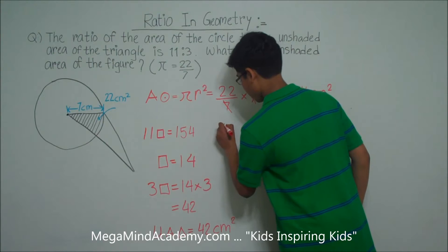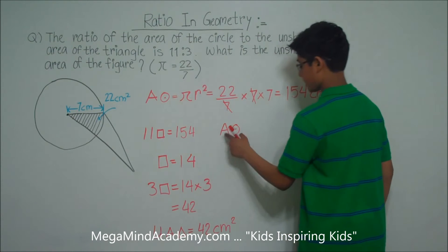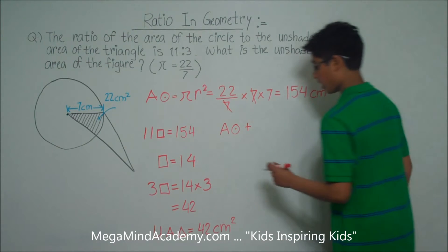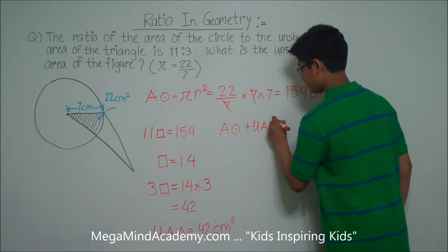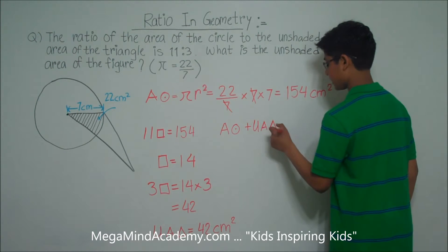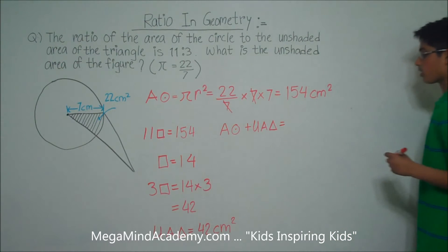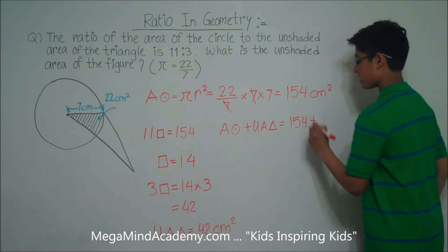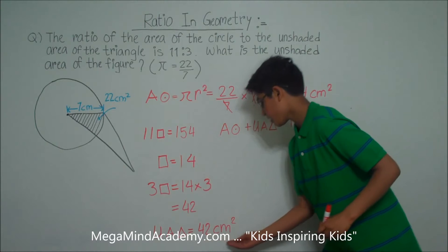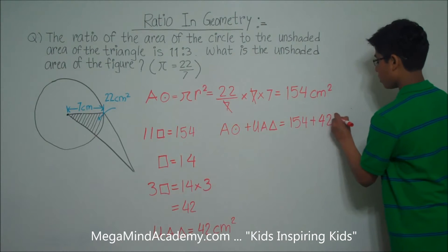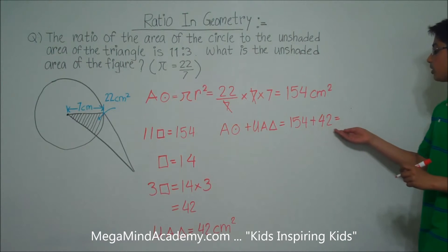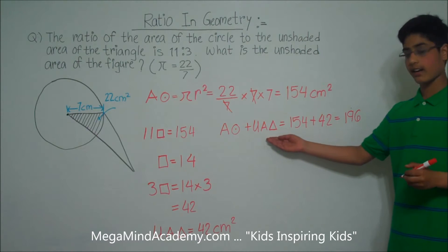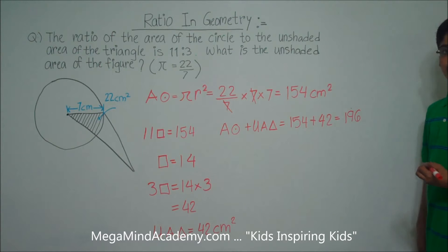Let's add up the area of the circle plus the unshaded area of the triangle. The area of the circle is 154 centimeters squared, plus the unshaded area of the triangle which is 42 centimeters squared. So 154 plus 42 equals 196. This means the area of the circle plus the unshaded area of the triangle is equal to 196 centimeters squared.